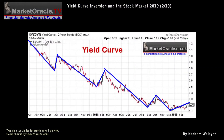An inverted yield curve is basically when the yield on the 2-year US government bond exceeds the 10-year US bond yield. As worried investors opt to disinvest from risky assets in favour of safer long-term government bonds, thus driving down long bond yields, and the closer the yield curve gets towards an inversion, the greater the likelihood for a future recession.